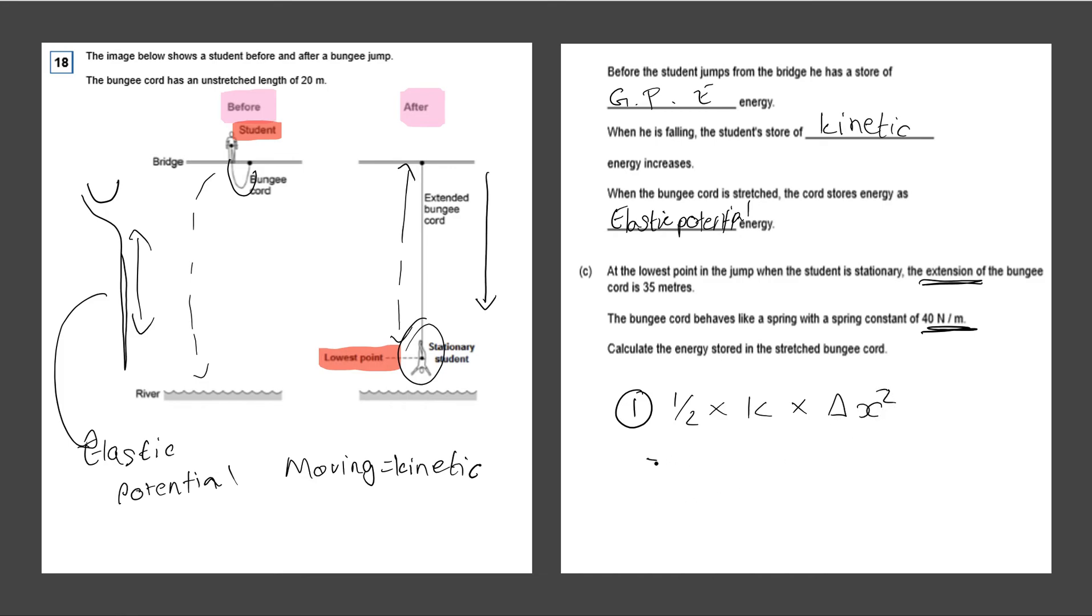So we have 0.5 multiplied by the spring constant, which is 40 N per meter multiplied by the extension, which is 35 meters squared. And they're all in the correct formula. So all we need to do is type this into our calculator.